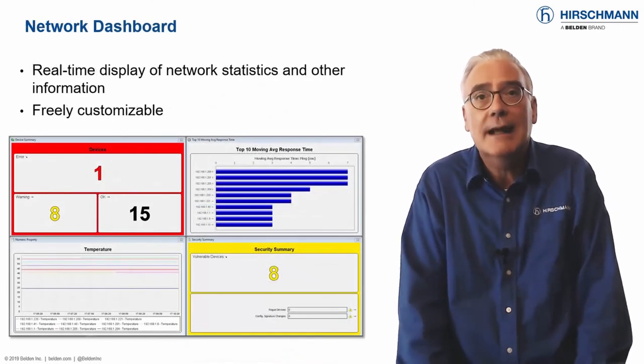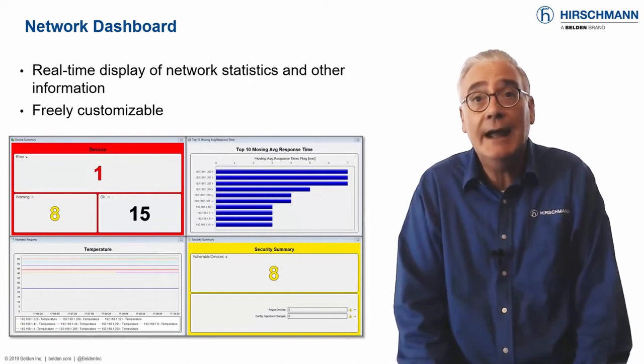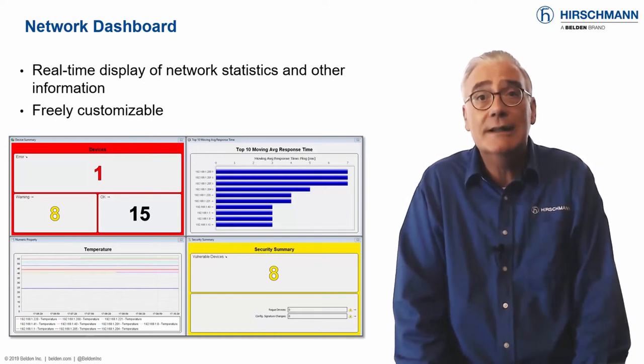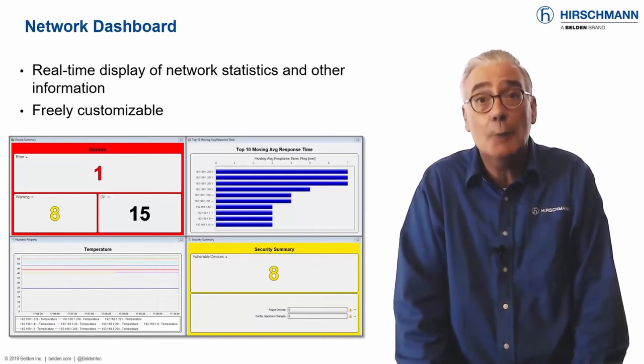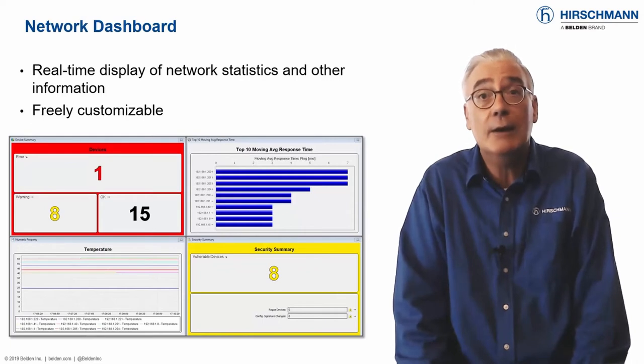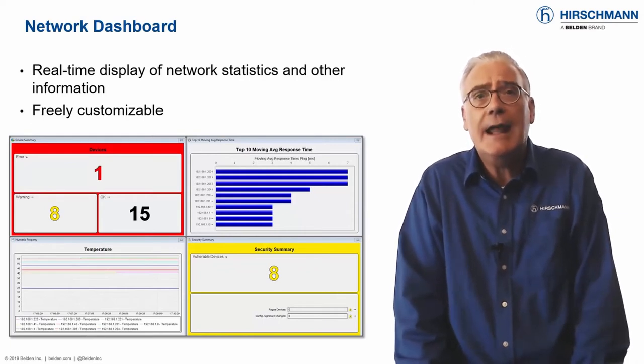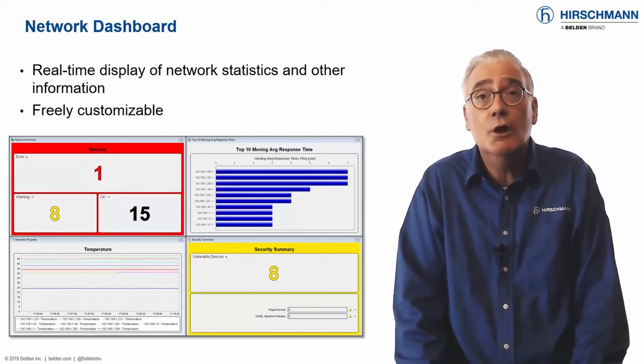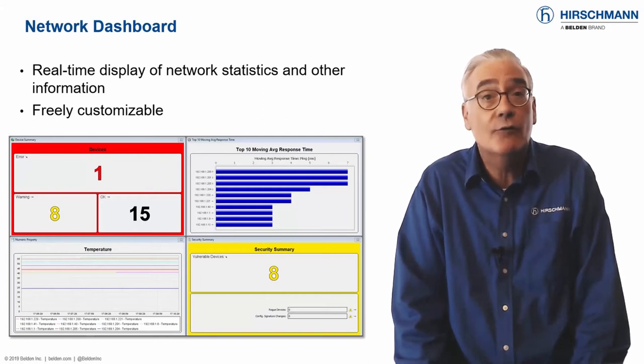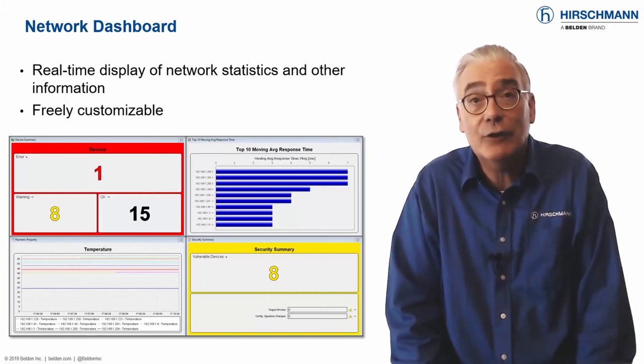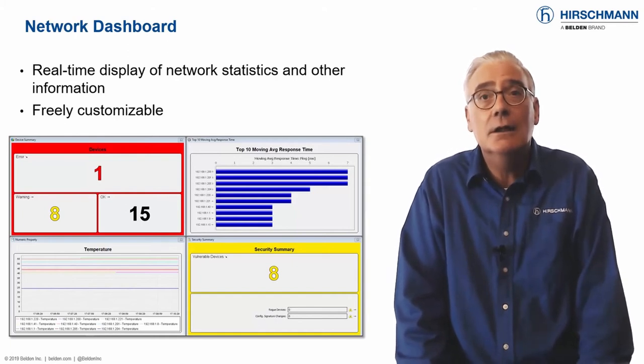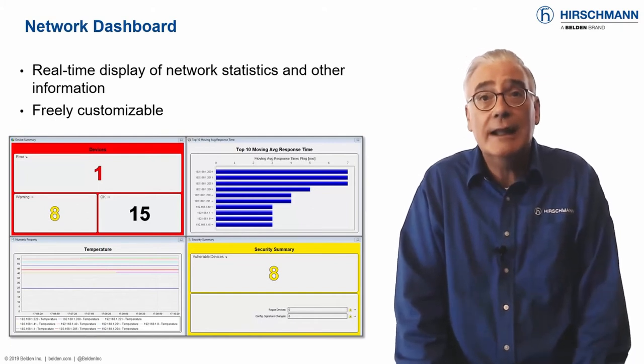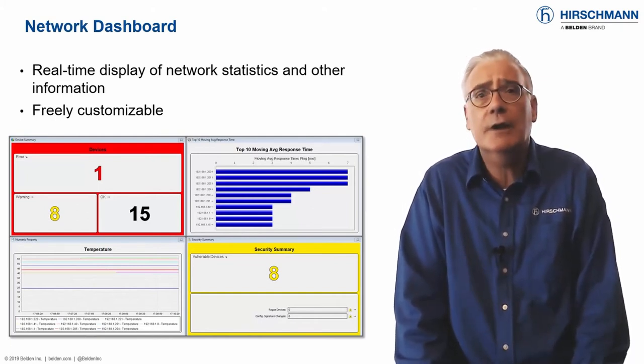A network operator has many daily tasks, and monitoring the health of the network is just one of them. A network dashboard is a useful tool to help operators stay up-to-date with the network health. Essentially, a network dashboard is a large screen projected or attached to a wall which displays a real-time summary of various network components in a graphical, color-coded style. It shows the network status at a glance. The dashboard in Industrial HiVision is completely configurable.